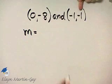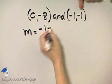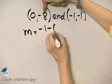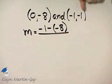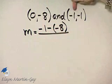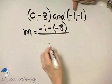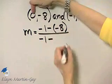I'll start with this y, negative 1, minus this y, negative 8, over... Don't forget, if I start with this y in the numerator, I must start with this x in the denominator. So over x minus x.